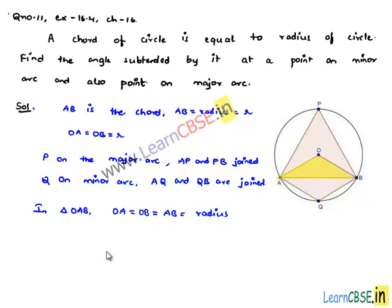In an equilateral triangle, we know that each and every angle is equal to 60 degrees. The angle subtended by the chord at the center will be equal to 60 degrees. That is, angle AOB is equal to 60 degrees.